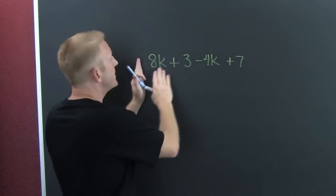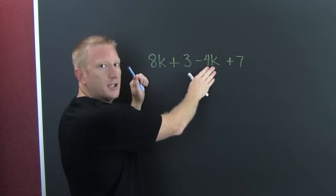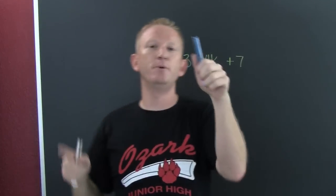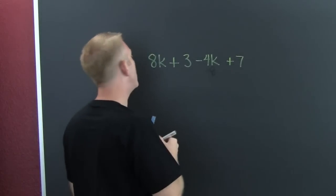But we do see that this 8k and that minus 4k. Anyways, what do we want to do? We want to combine like terms. Like terms are terms with exactly the same variables raised to exactly the same powers.